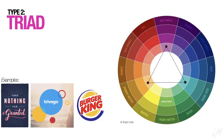Another popular one is Triad. It's basically the same thing as complementary but with three colors. On the same color wheel, a color design is Triad if it creates a perfect triangle between three different colors. A popular example of this is the Burger King logo. And if you watch for it, you'll see that a lot of designs that use three colors will use this same pattern.